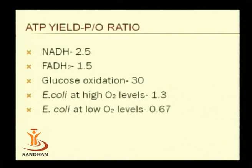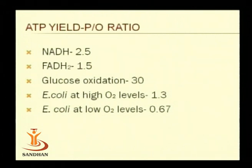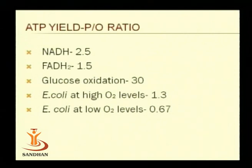In comparison to this normal picture of ATP generation, E. coli at higher oxygen levels generates only 1.3 ATPs per NADH — quite low compared to normal systems. E. coli at low oxygen levels generates only 0.67 ATPs. During anaerobic respiration, still less ATP is generated, but anaerobes also utilize the electron transport chain for their energy generation, making it the main mechanism for maximum ATP generation.